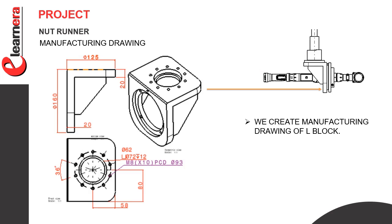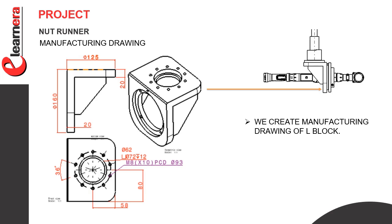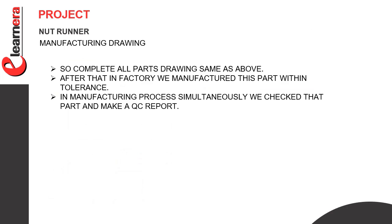Now we see the L block drawing — we give all dimensions with tolerance required for manufacturing. The position of the L block is on the top tube. This L block helps to hold the tool and also holds the bearing housing. The material of the L block is mild steel. We complete all parts drawings the same way, and then in the factory we manufacture all parts within tolerance. During the manufacturing process we simultaneously check the parts and make a dimensional inspection report.